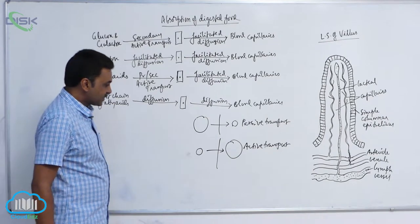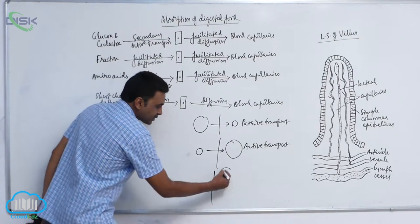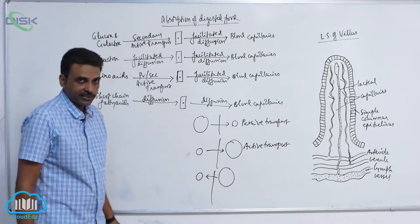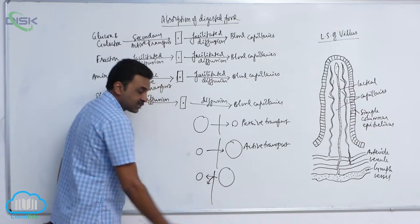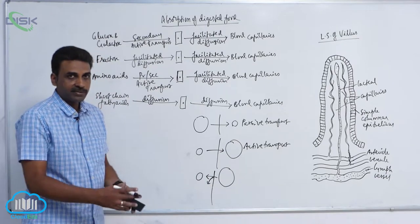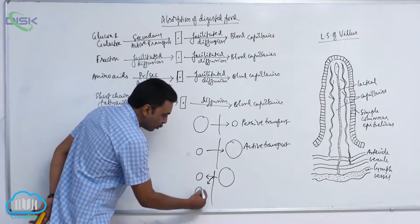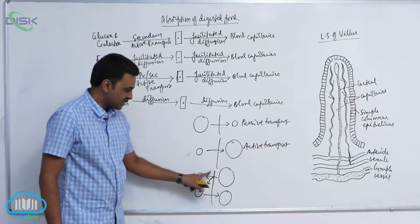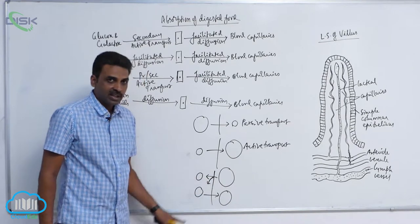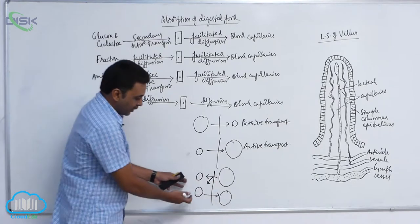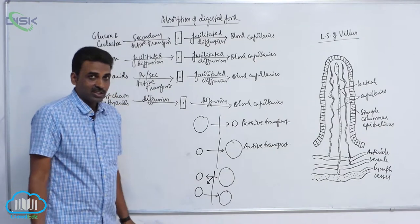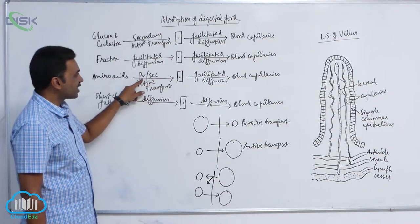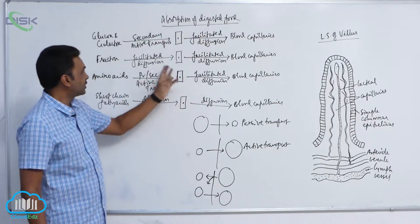Secondary active transport means one substance is moving down the concentration gradient, and at that time some energy is released. That energy is utilized to move another substance against the concentration gradient. So some substances moving down the gradient release energy that drives other substances against the gradient — this indirect use of energy is called secondary active transport.